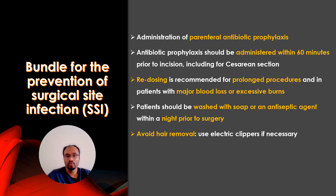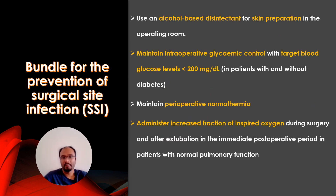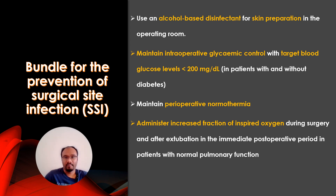The surgical site infection bundle includes: administration of parenteral antibiotic prophylaxis within 60 minutes prior to incision, including cesarean section. Redosing is recommended for prolonged procedures and patients with major blood loss. Patients should be washed with soap or antiseptic agent the night prior to surgery. Avoid hair removal or use electric clippers if necessary. Use alcohol-based disinfectant for skin preparation. Maintain intraoperative glycemic control with target blood glucose less than 200 mg/dL. Maintain perioperative normothermia, and administer increased fraction of inspired oxygen during surgery and after extubation.